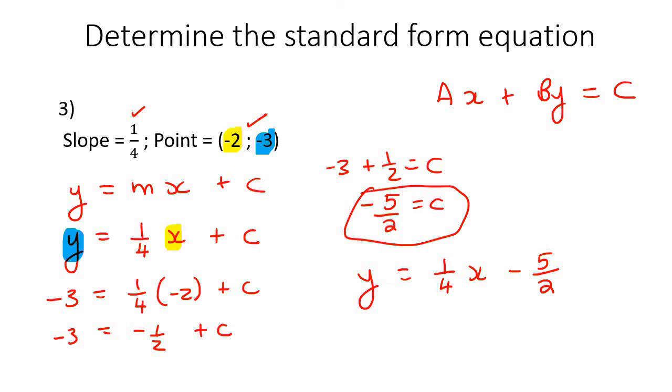Now, we are not allowed—remember, for a, b, and c, they must not be fractions. a, b, and c must not be fractions. So what are we going to do? Well, we are going to get a common denominator.